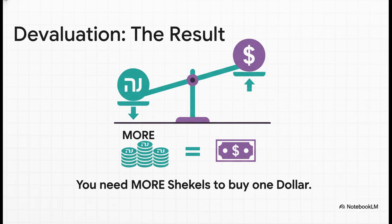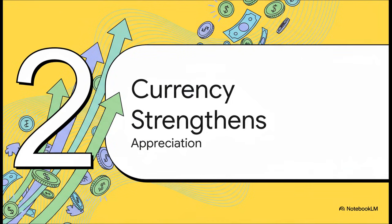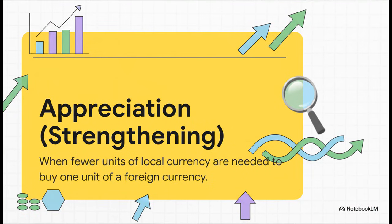The number went up, and that means the shekel got weaker. From the other side of the coin, you could say the dollar has gotten stronger. The bottom line: if you're holding shekels, you now need more of them to buy that $1. Appreciation is the exact opposite of devaluation — it means your local money is getting stronger, so you need fewer of your own bills to buy that same unit of foreign currency. The price tag on foreign money went down.